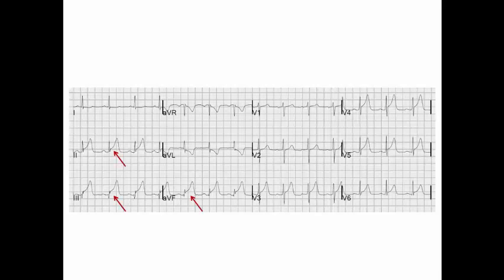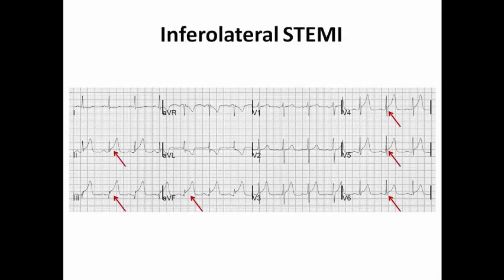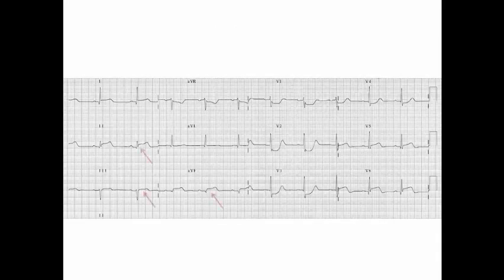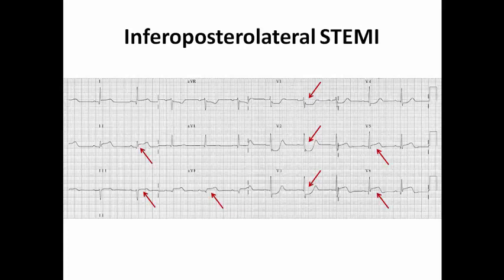In this ECG example, there is ST elevation in the inferior leads. In another ECG, there is ST elevation in inferior leads, ST elevation in lateral leads V5 and V6, and clear criteria of posterior MI with ST depression and dominant R wave in the right precordial leads — this is infero-posterolateral STEMI.